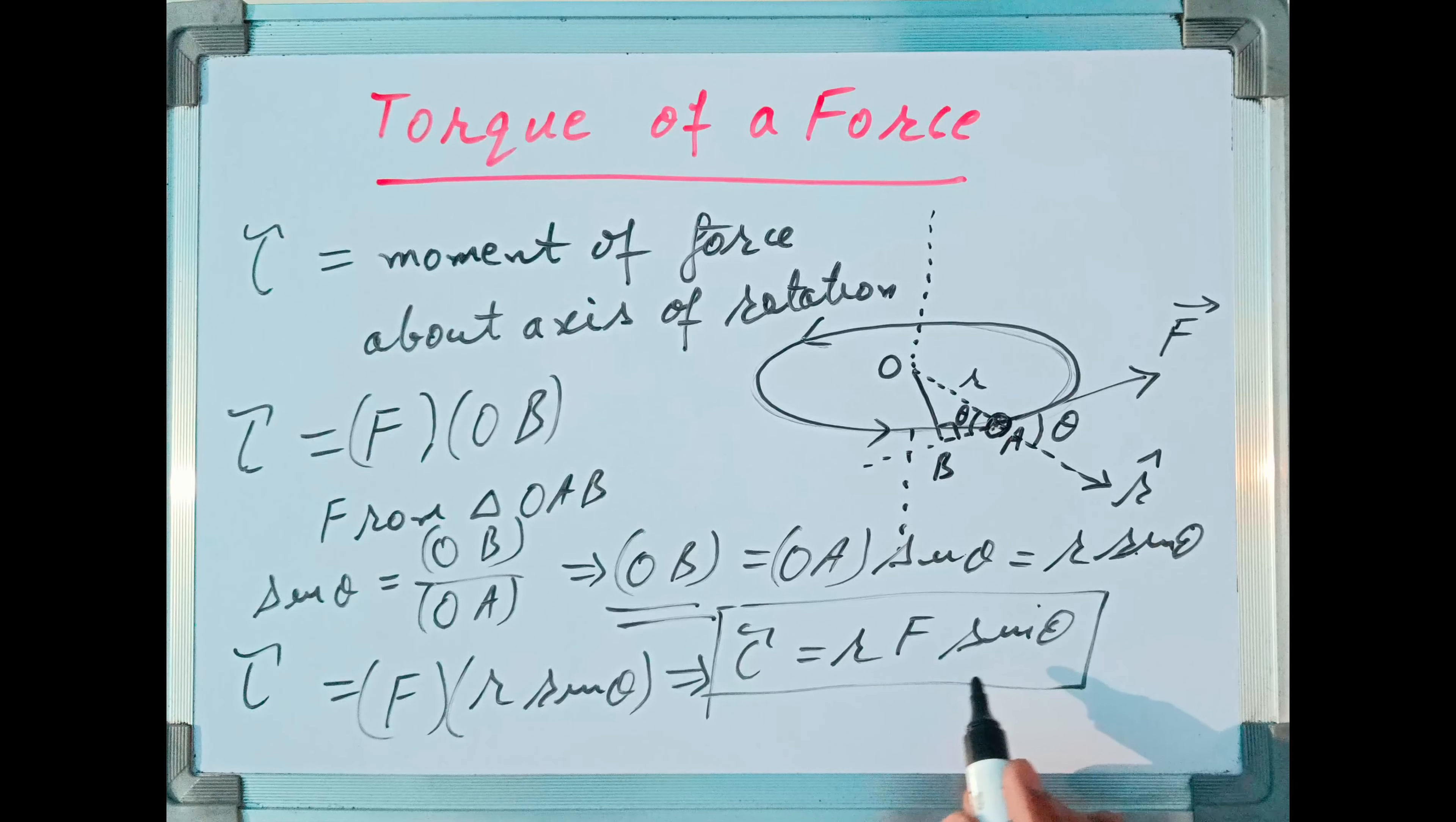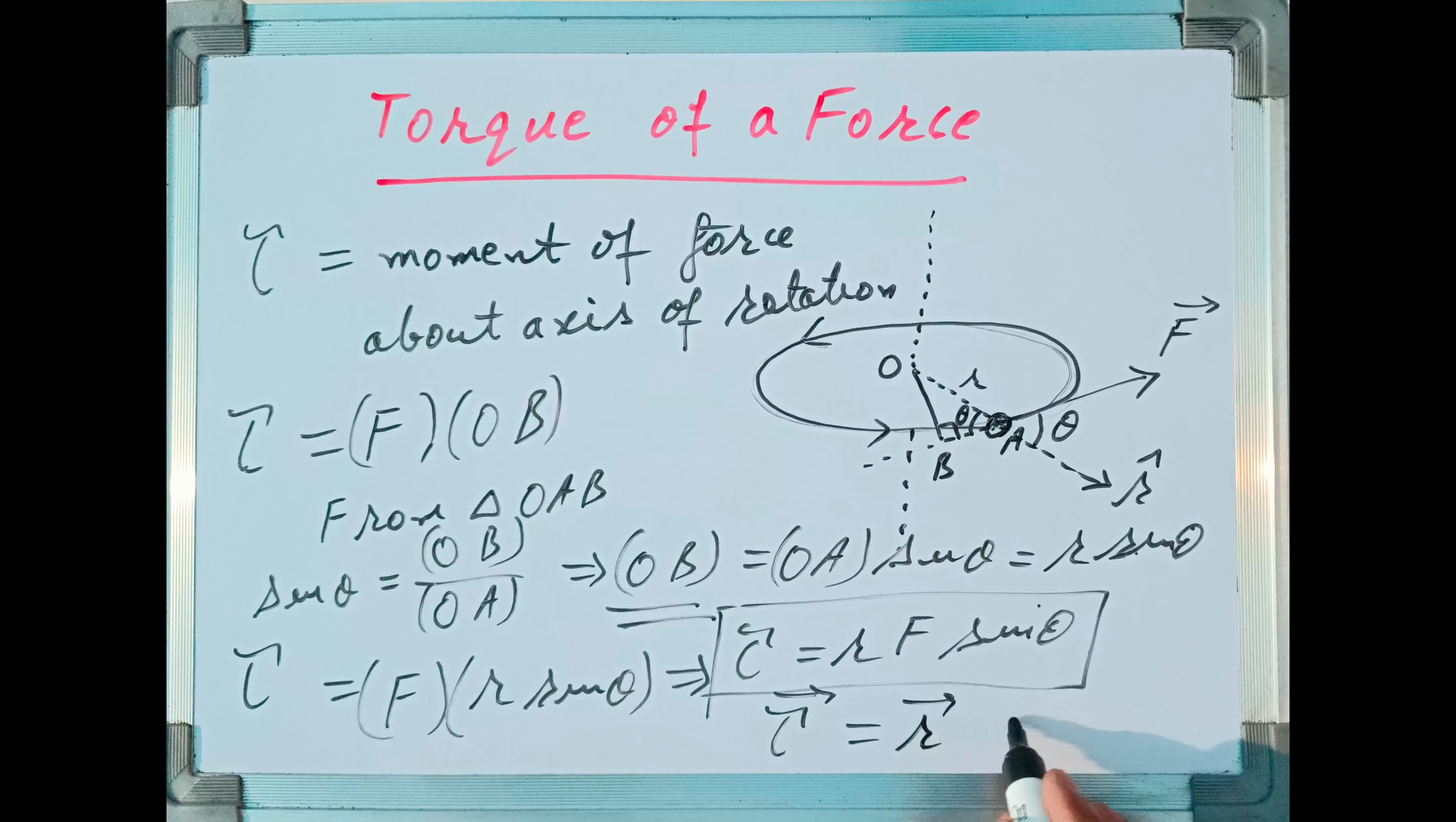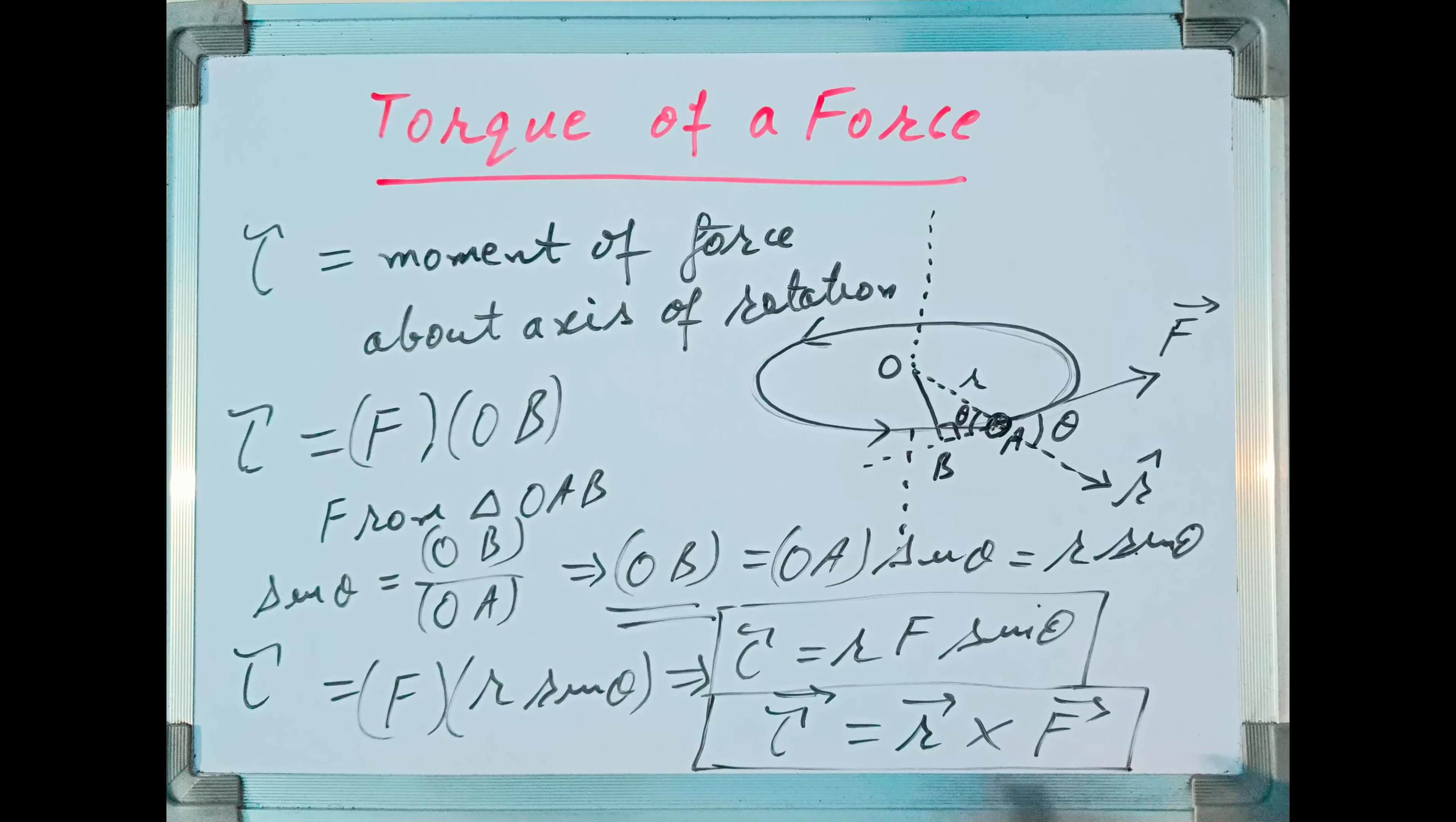I can write torque of force is equal to F multiplied by R sin theta. And I can rewrite this result as RF sin theta. So this gives us magnitude of torque of a force acting on a body that starts moving in a circular path of radius R.